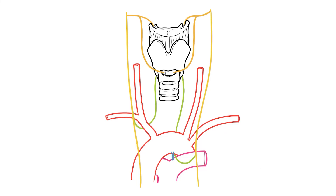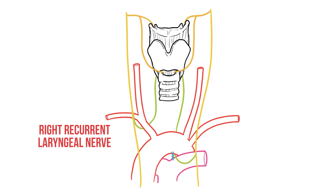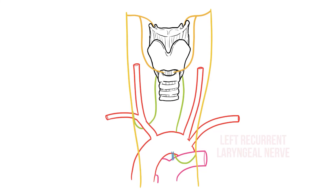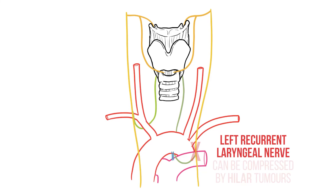The recurrent laryngeals are sometimes compressed by tumors in the lung. Because of the asymmetrical nature of these nerves, tumors that affect them will be found in different locations. The right recurrent nerve is found high in the chest, so tends to be compressed by apical tumors in the top of the lung. Meanwhile the left recurrent branch continues down to around the level of the hilum — the central region of the lung — where hilar tumors could compress it.